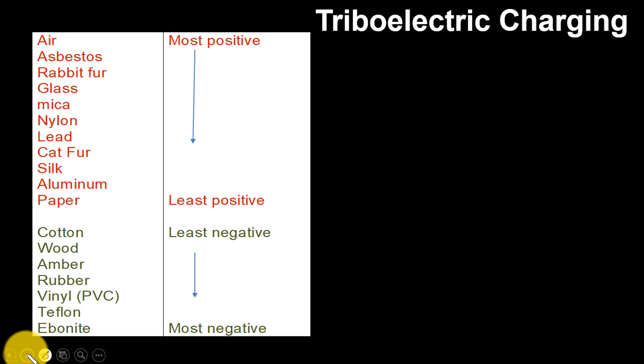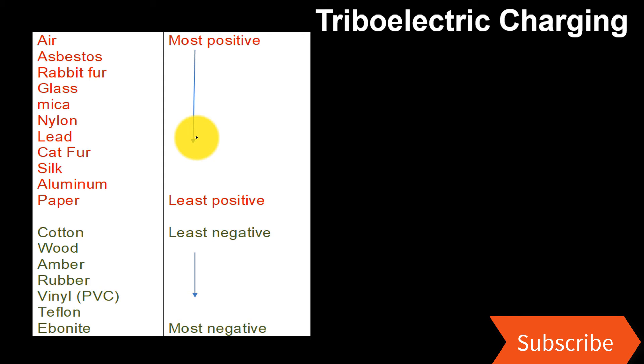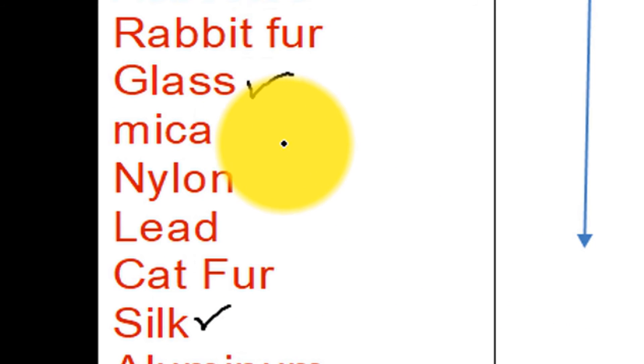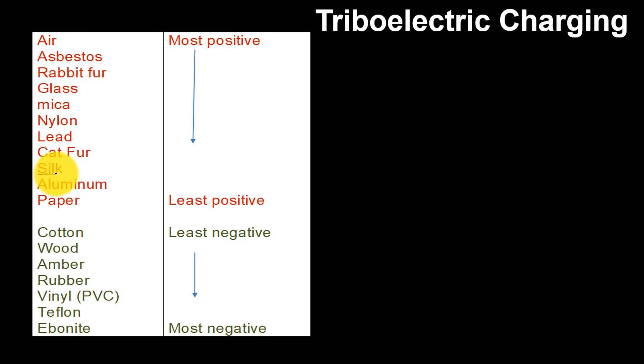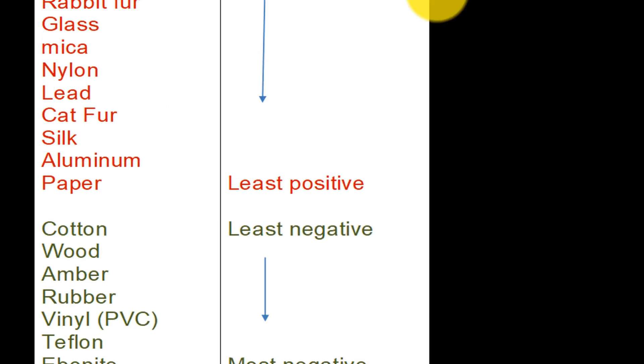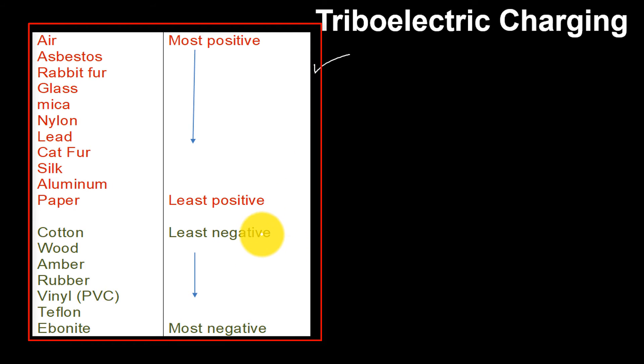Now triboelectric charging. In general, when two materials are rubbed together, the magnitude and sign of charge that each material acquires depends on how strongly it holds on into electrons. For example, if silk is rubbed against glass, the glass acquires a positive charge. It means electrons have moved from glass to the silk, giving the silk a negative charge. If silk is rubbed against amber, however, the silk becomes positively charged as electrons in this case pass from silk to the amber. This table shows the relative charging due to rubbing for a variety of materials. This relative charging is known as triboelectric charging, and this series is known as triboelectric series.